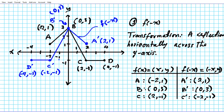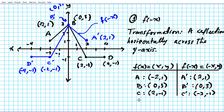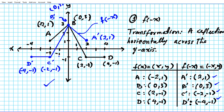Point D is four, comma negative one. Applying the transformation rule f of negative x, we just negate the x coordinate, giving us D prime: negative four, comma negative one. Let's compare these to our graphed points A prime, B prime, C prime, D prime. A prime: two, one — good. B prime: zero, three — checks out. C prime: negative two, negative one. D prime: negative four, negative one. So our answer is in fact correct.